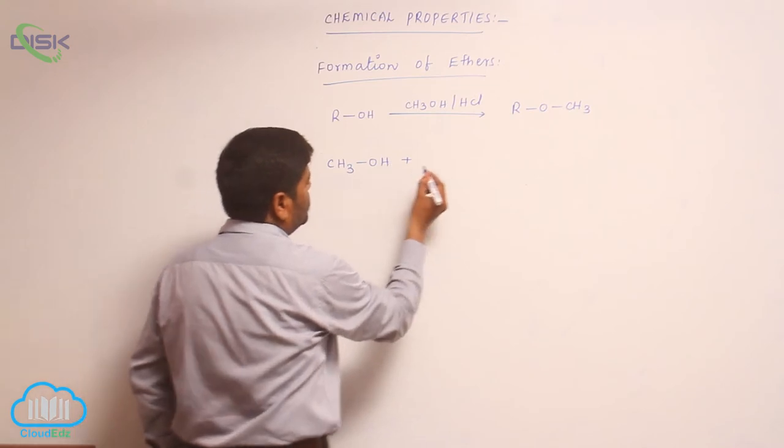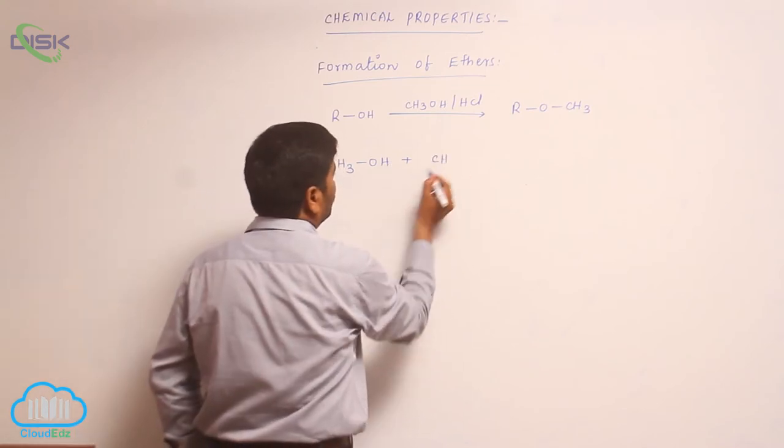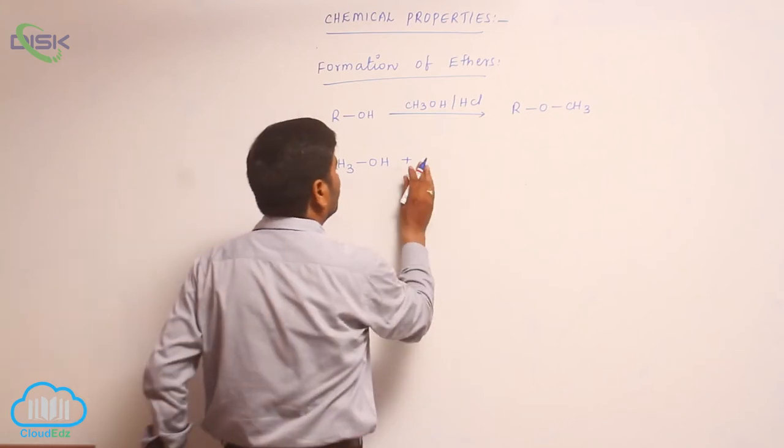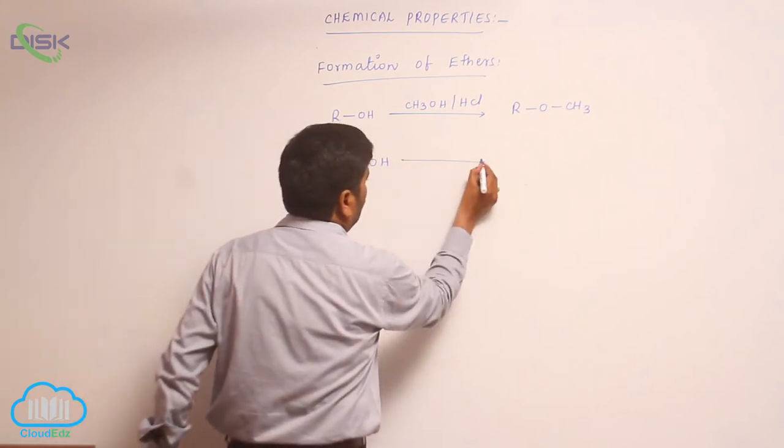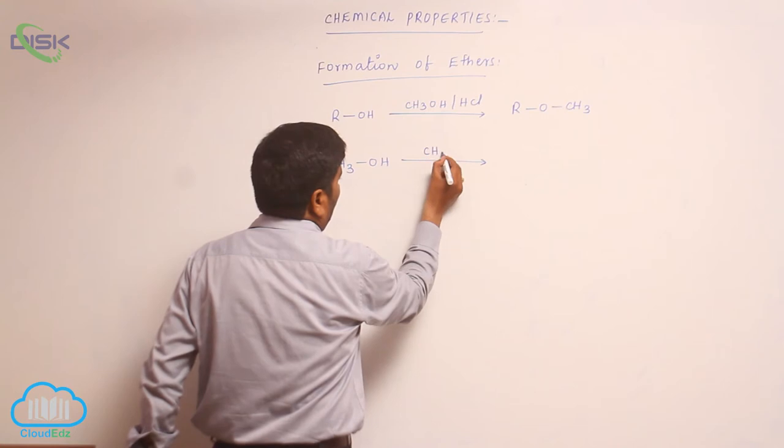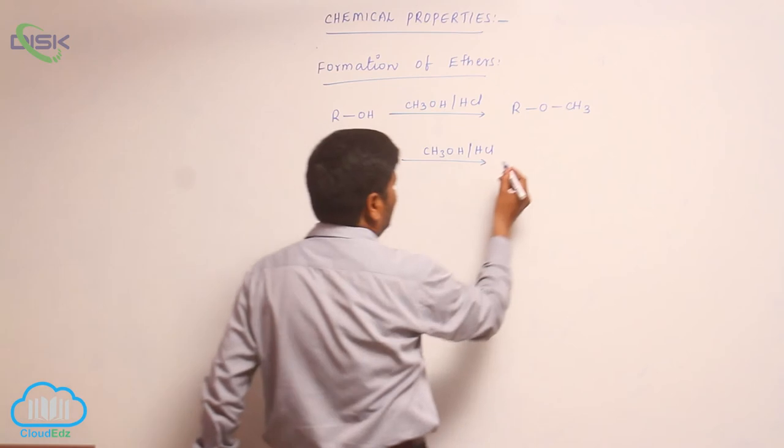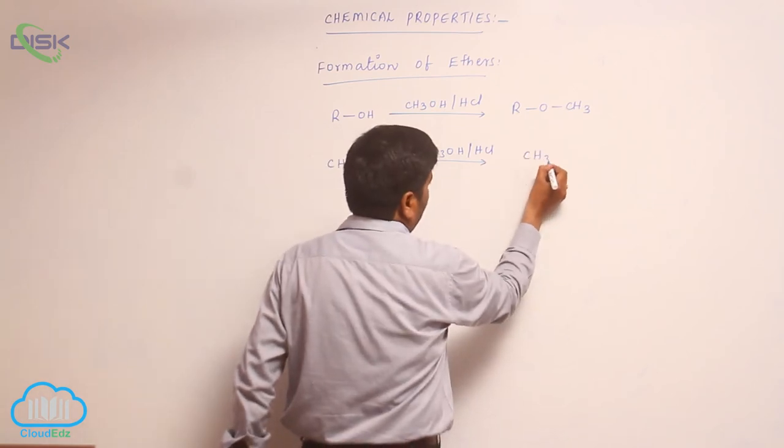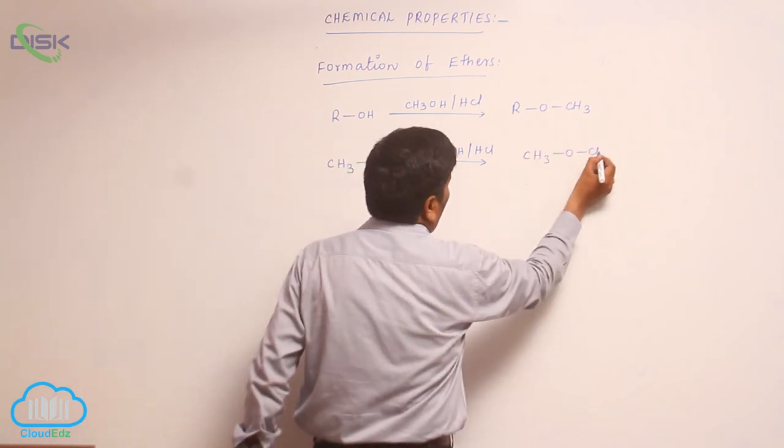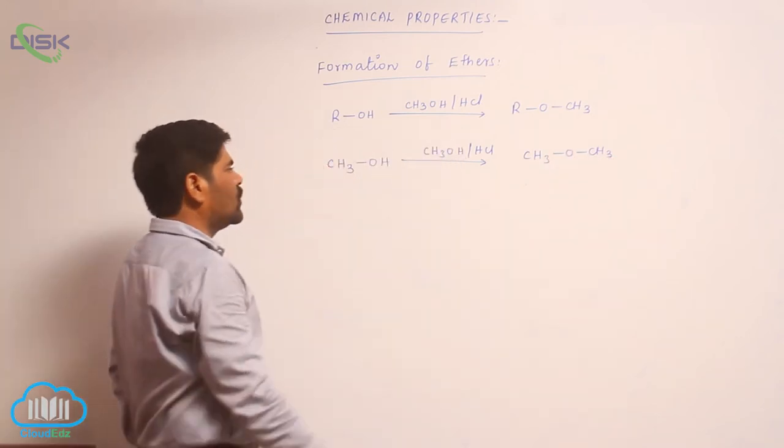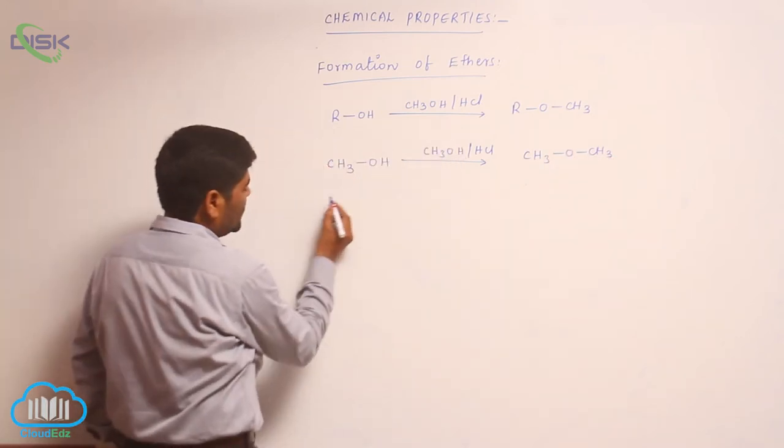Methyl alcohol reacts with another mole of methyl alcohol in presence of hydrochloric acid. It always forms an ether and loss of water molecule takes place. Second one...